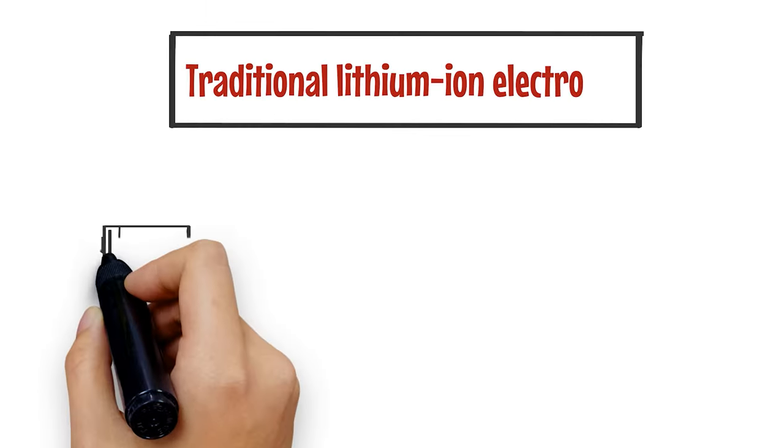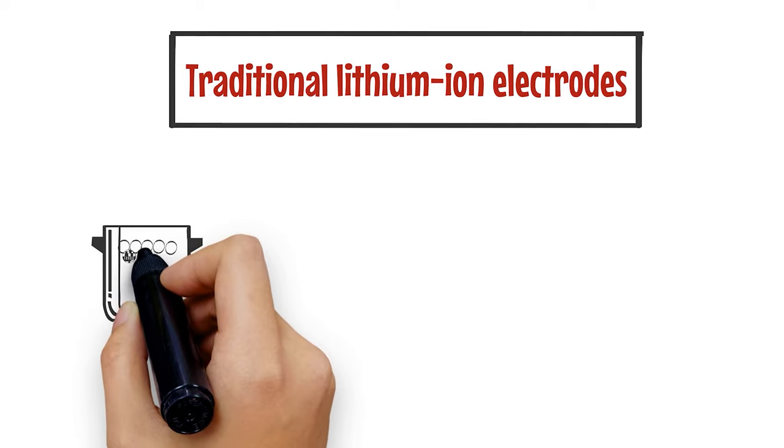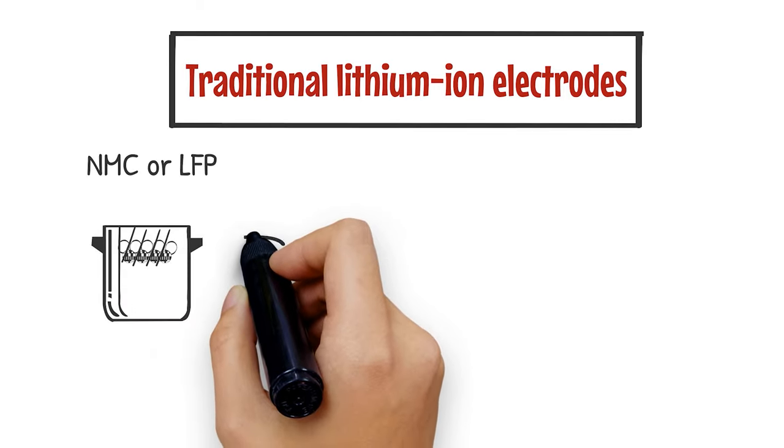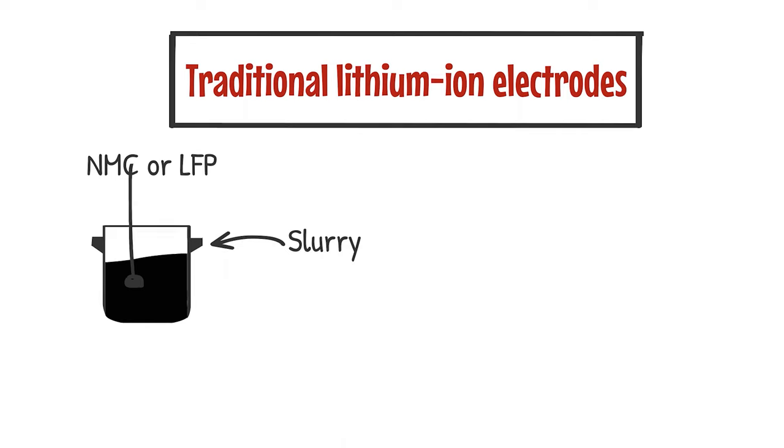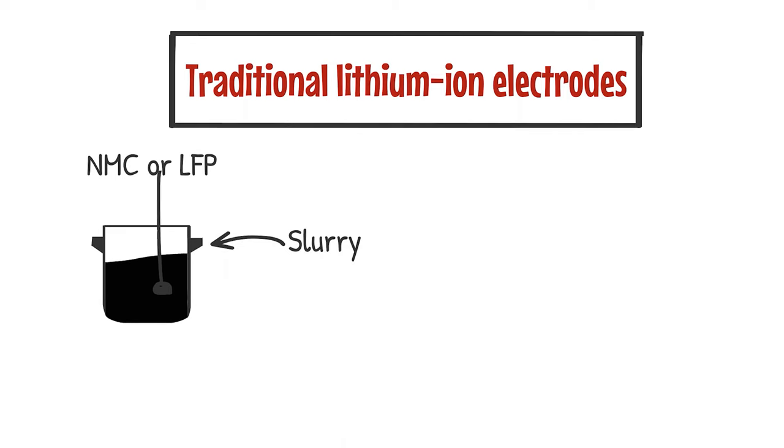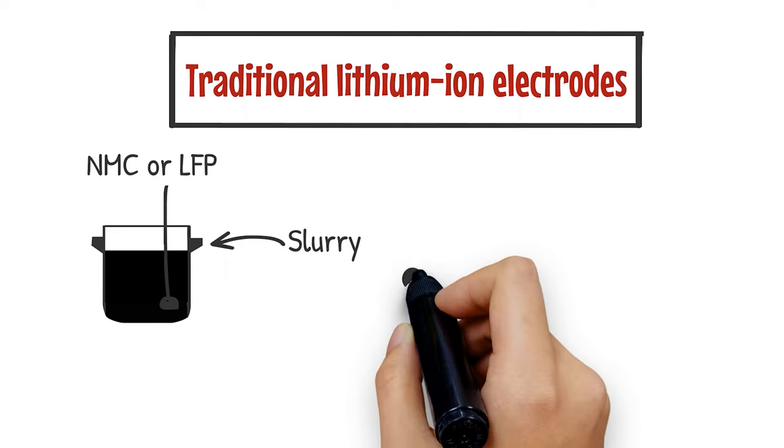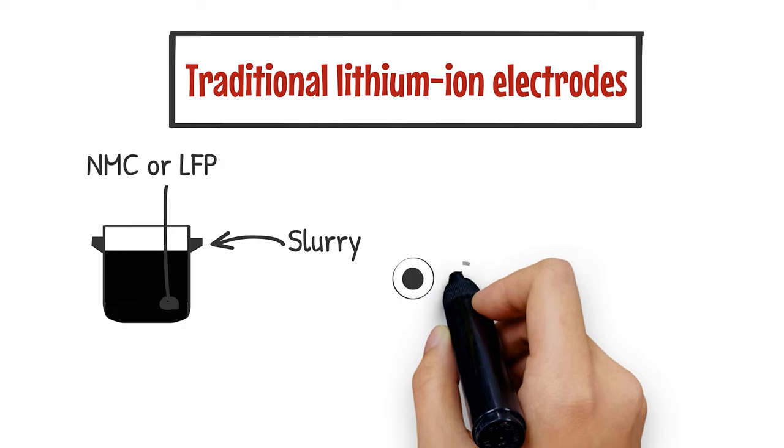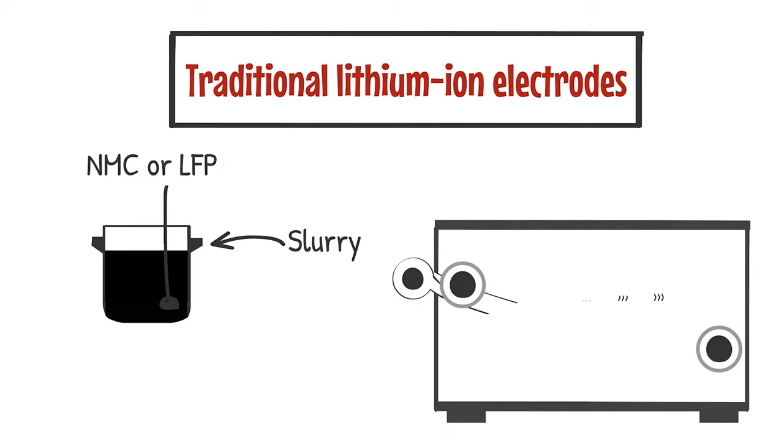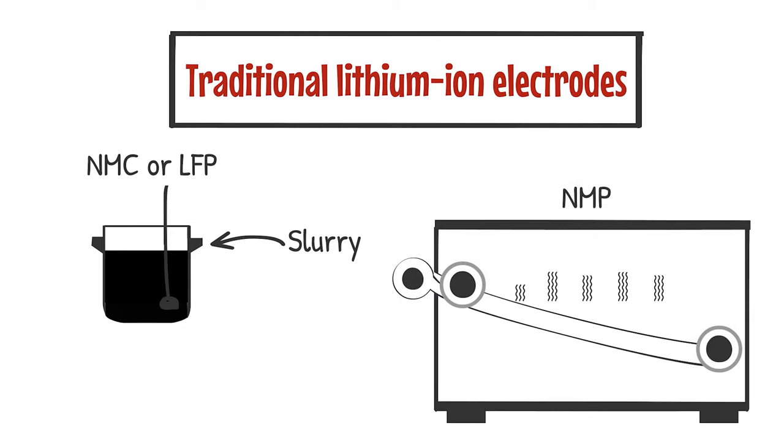In making traditional lithium ion electrodes, you would have a slurry made up of NMC or LFP particles, a binder and a solvent to dissolve that binder, that is painted onto this roll of aluminum foil. The foil is introduced into a drying oven, where the solvent, or NMP, slowly evaporates, leaving the binder behind and LFP or NMC stuck to the foil.